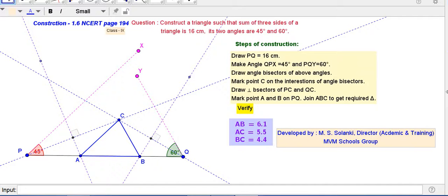Here in this figure we see PQ is equal to 16 cm. It is sum of the three sides equal to sum of the three sides. We have drawn 16 cm PQ is equal to 16 cm sum of three sides. Draw PQ. Make an angle QPX is equal to 45 degree and angle PQY 60 degree.